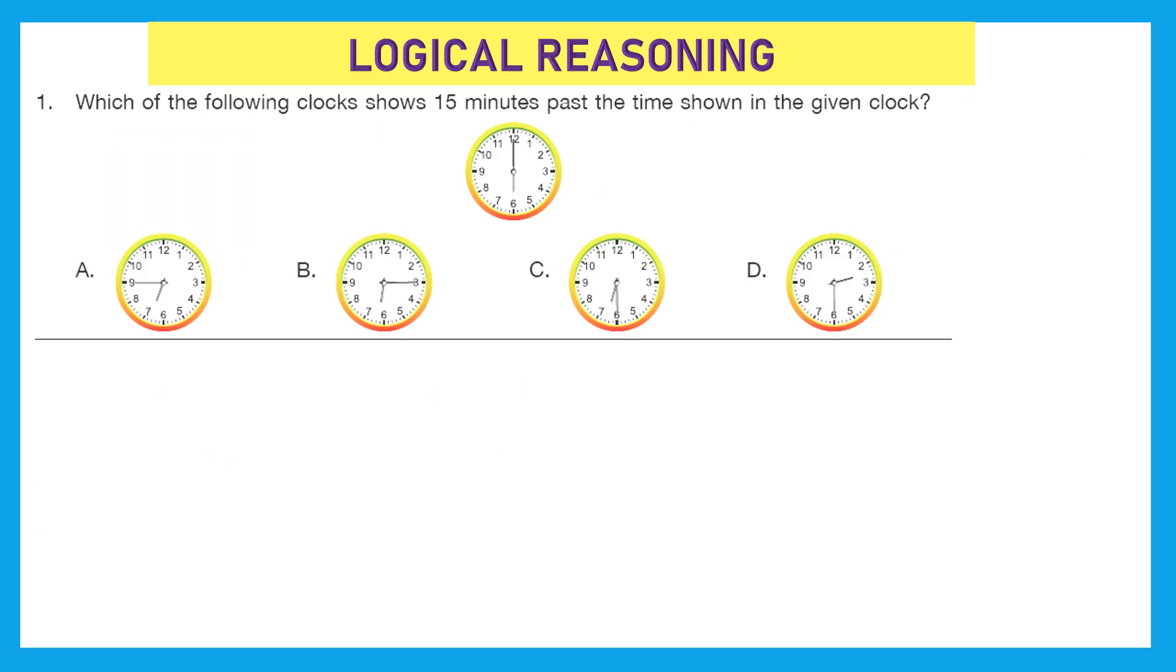Let's start with our first section, that is logical reasoning. Question 1: which of the following clocks shows 15 minutes past the time shown in the given clock? So let's find out what is the time shown in the given clock. The hour hand is on 6 and the minute hand is on 12. That means it is 6 o'clock.